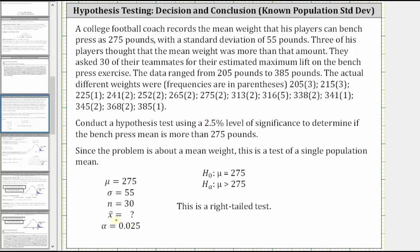Before we find the sample mean, let's talk about the null and alternative hypotheses. The players thought the mean weight was more than the average of 275 pounds, which gives us mu is greater than 275 as the alternative hypothesis. And if mu is not greater than 275 pounds, it will be assumed mu is equal to the given average of 275 pounds, which gives us the null hypothesis.